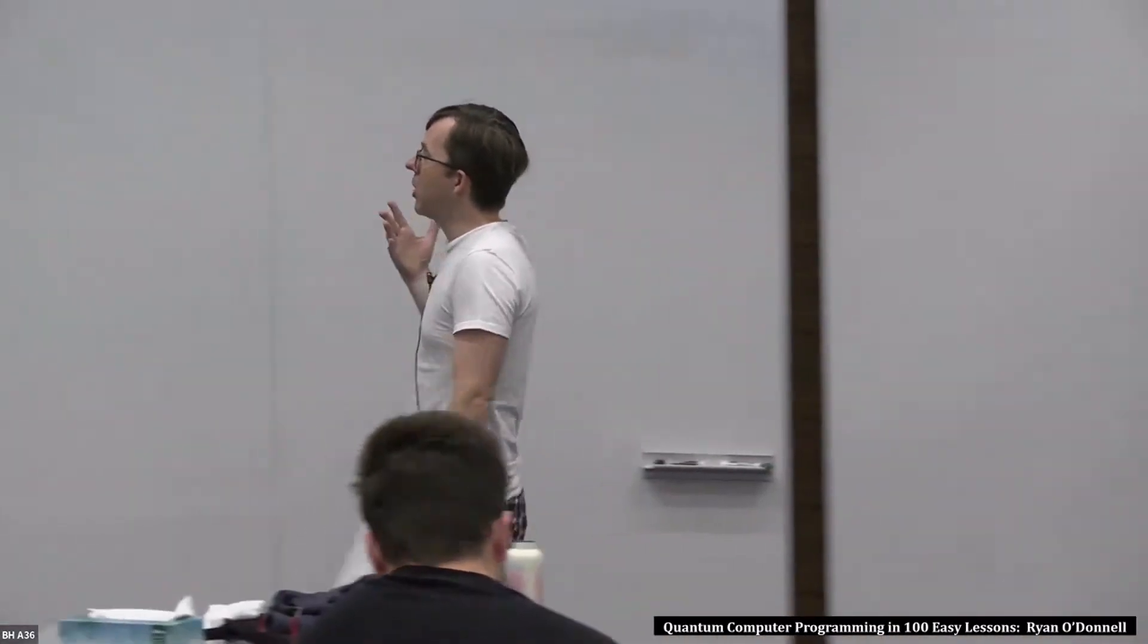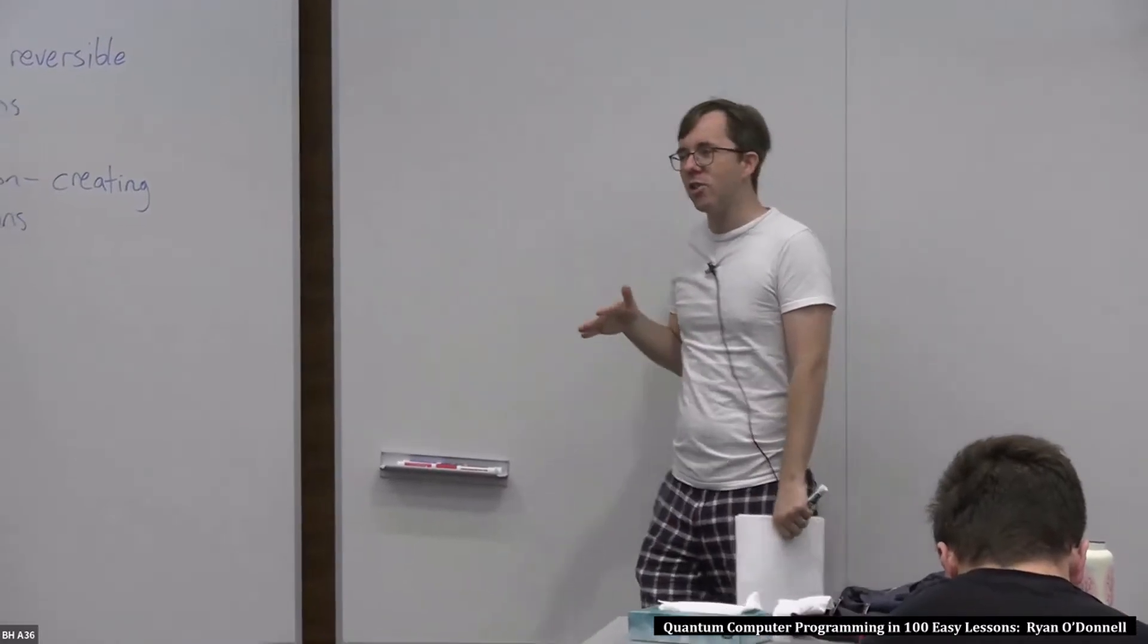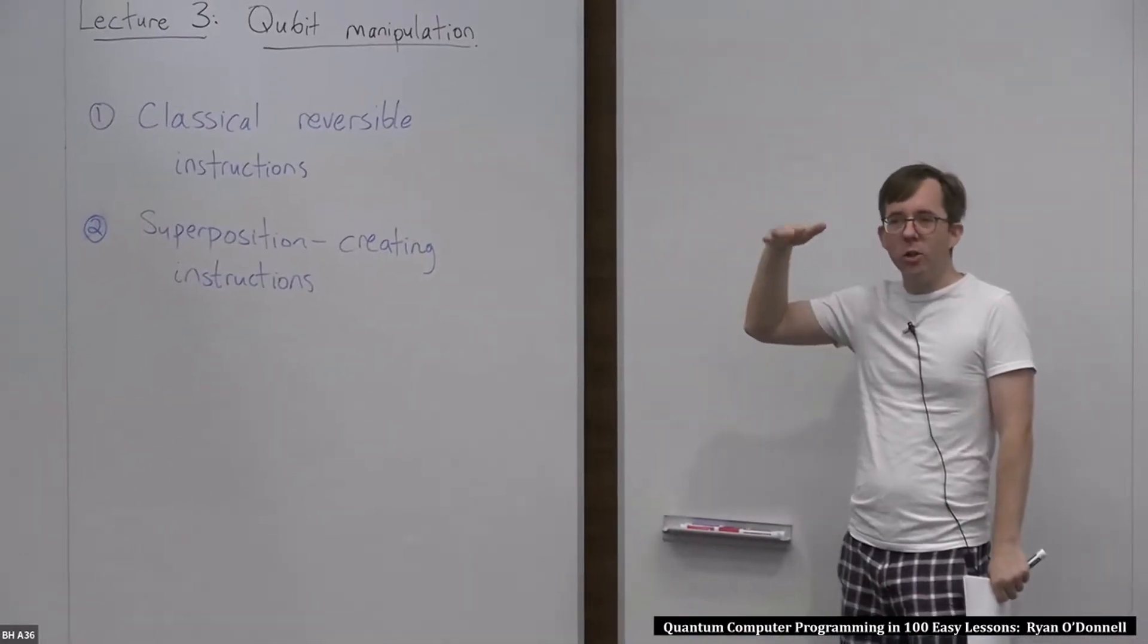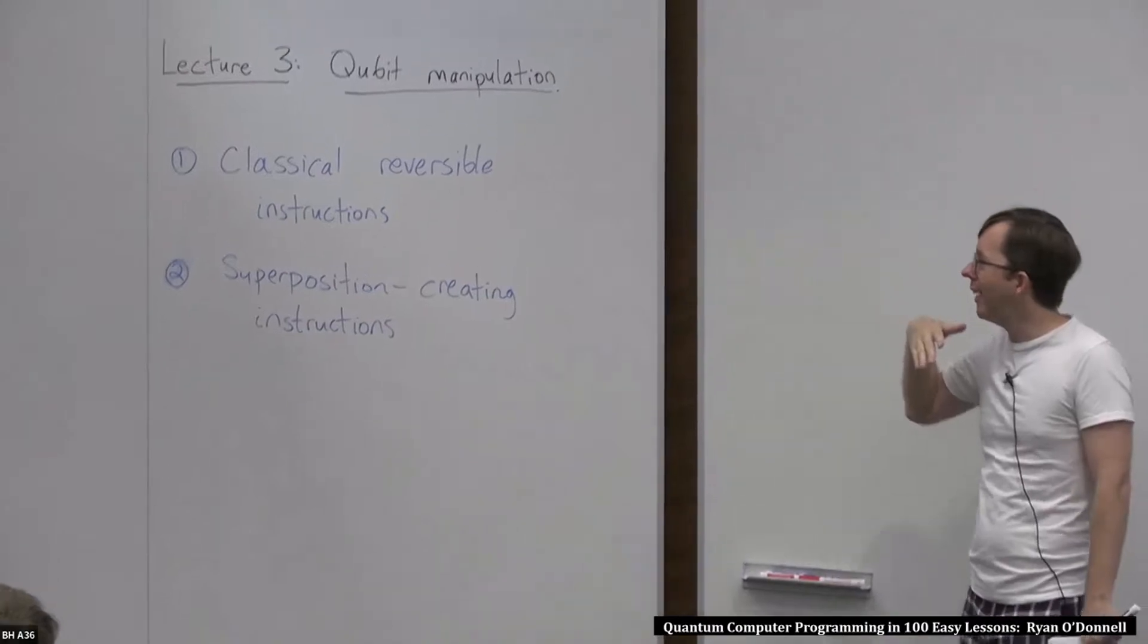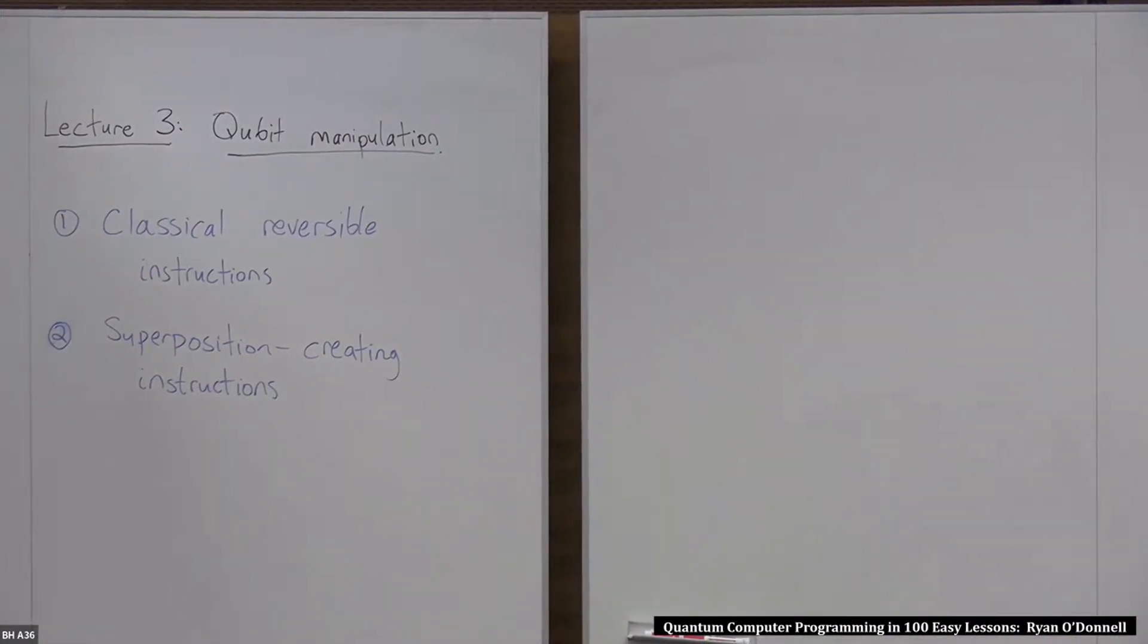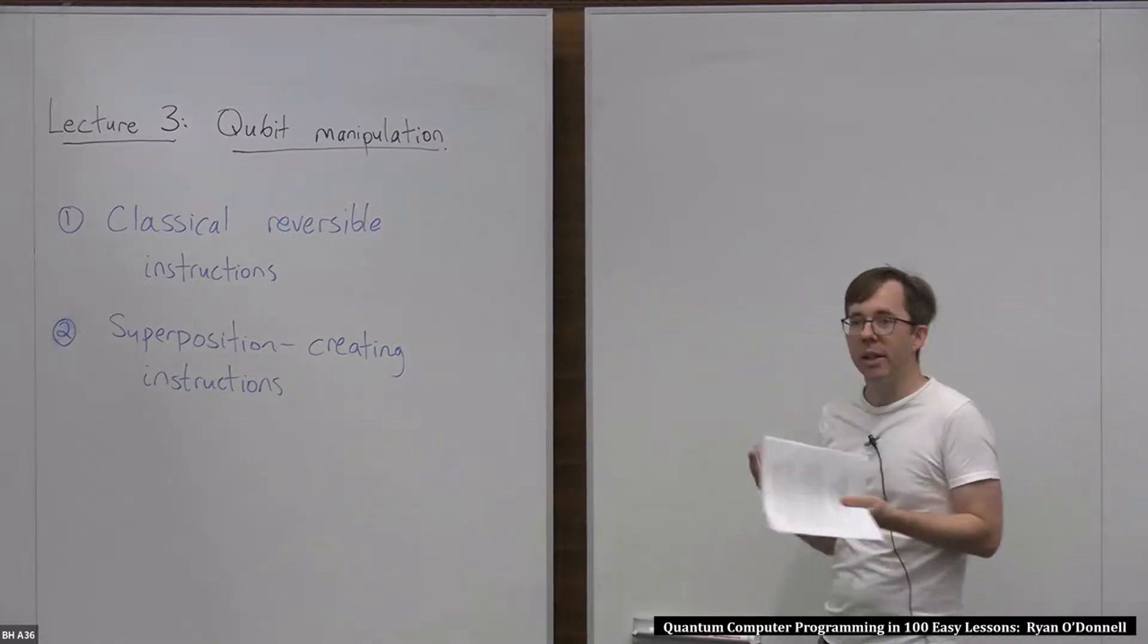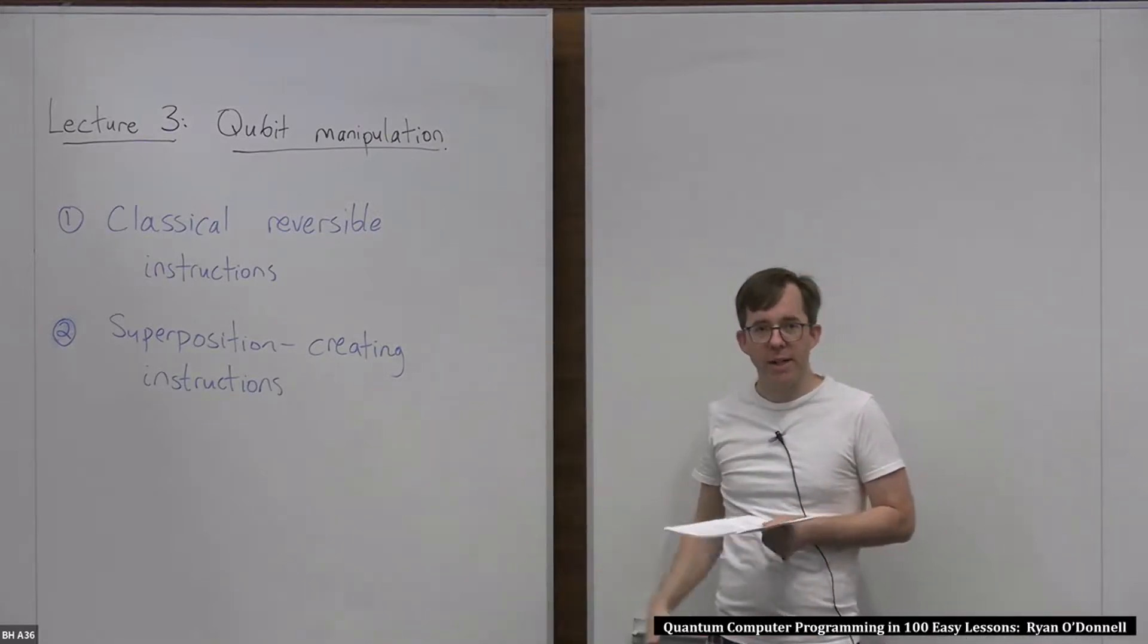So last time I mentioned that there's your main quantum instructions, and there's two kind of edge case instructions, like new qubit that makes a new qubit and the extract all instruction, which converts qubits to bits through measurement. Those are the edge cases, but the main instructions are the ones that manipulate the states of qubits, and that's what we're going to talk about today.